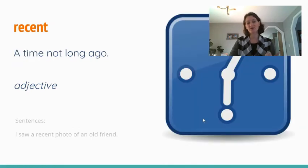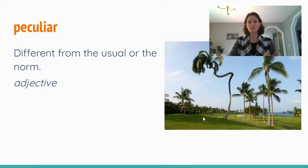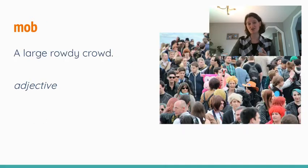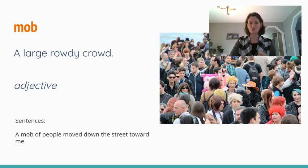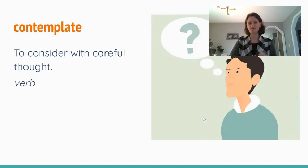Recent is a time not very long ago like seeing a recent photo. Peculiar, different from the usual or from the norm, a tree is a peculiar shape. A mob is a large rowdy crowd, a mob of people walking down the street.